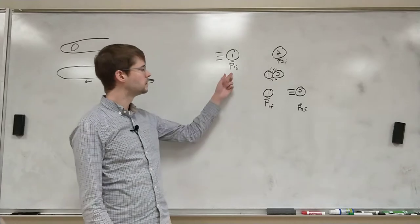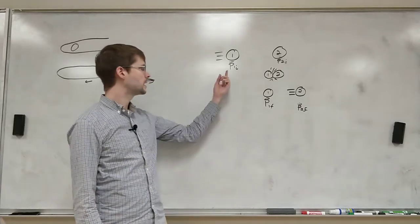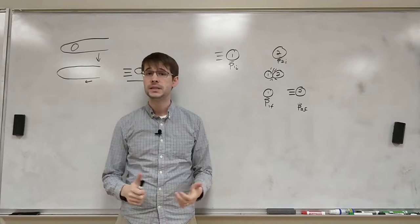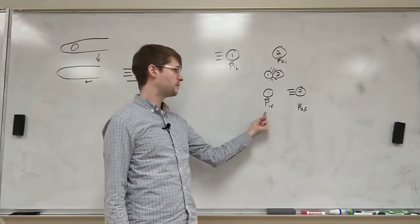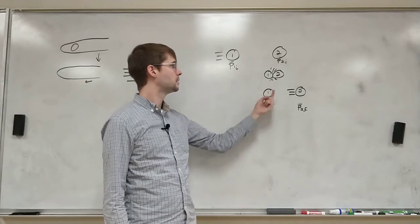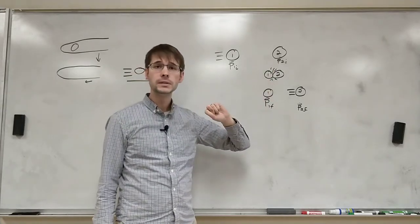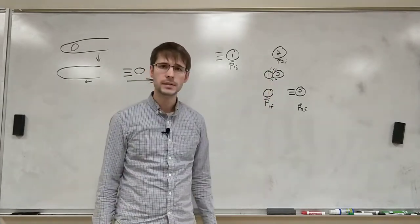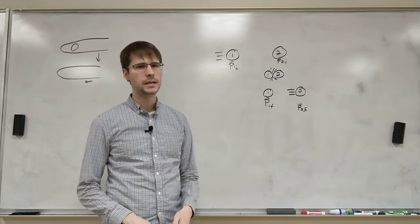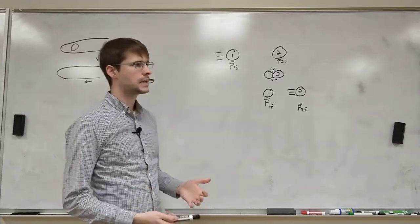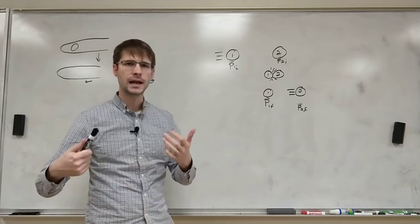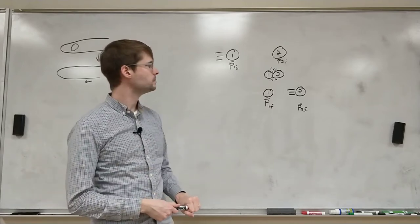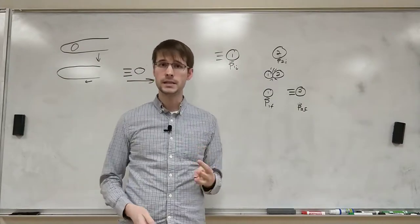So here we see for ball one, it has an initial momentum of p1 sub i. And at the end, it's got a final momentum of p1 sub f. The other ball has p2 sub i and p2 sub f as the initial and final momentums. So if we look at this as from a system point of view, we've got to think, what is our system? We can actually define three different systems in this case.